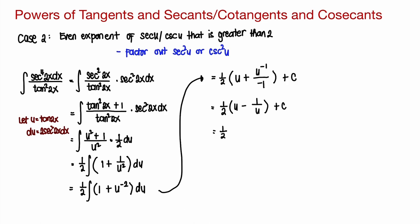But then u is equal to tangent of 2x. So 1 half times tangent of 2x minus 1 over tangent of 2x plus c. But we know that 1 over tangent of 2x is cotangent. So this is now 1 half tangent of 2x minus cotangent of 2x plus c.